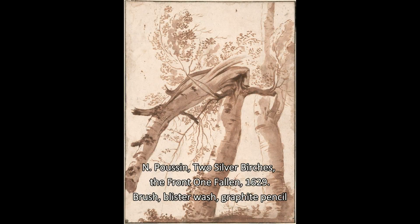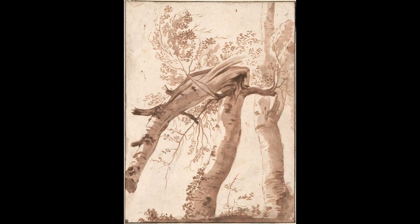There are many decisions an artist must make. Let's take subject matter — what kind of tree should the artist select to draw or paint? Here is Nicolas Poussin's drawing of two silver birches, the front one fallen. The focus is on the more interesting of the two trees, the damaged front one. The healthy tree in the background is drawn lighter, so focus can remain on the one in front.